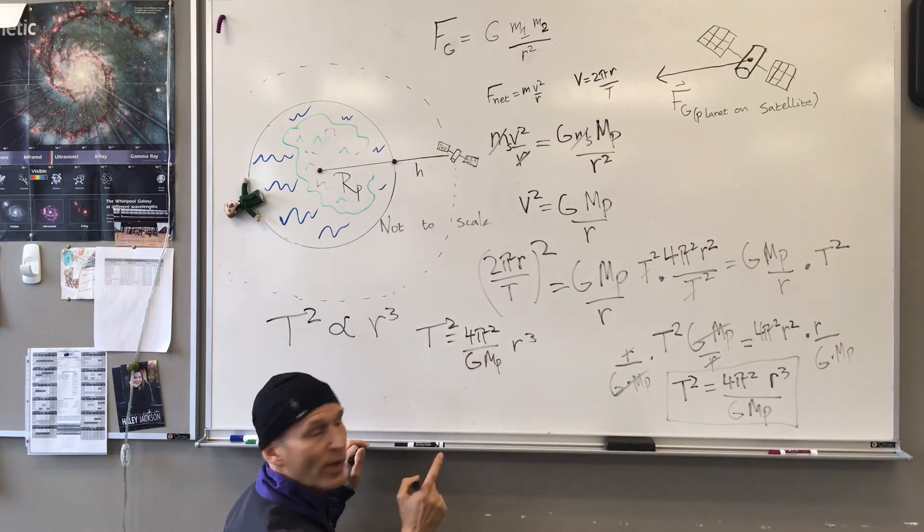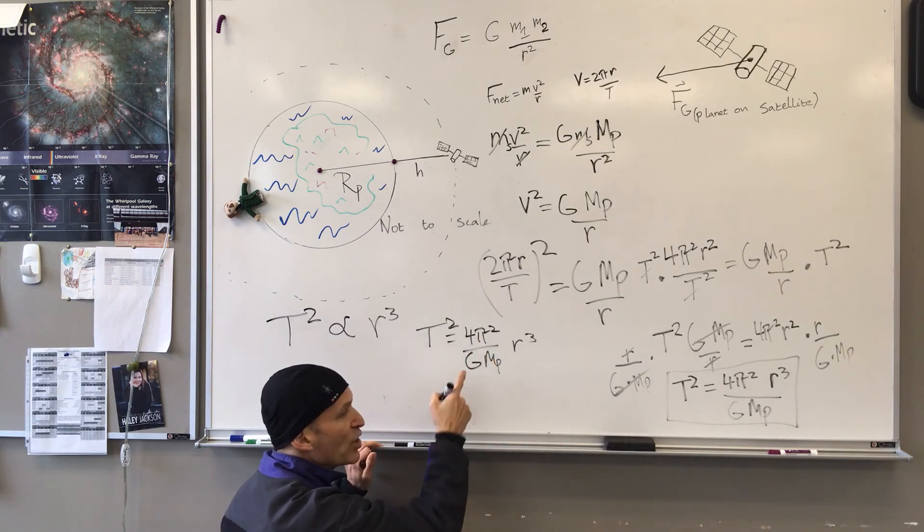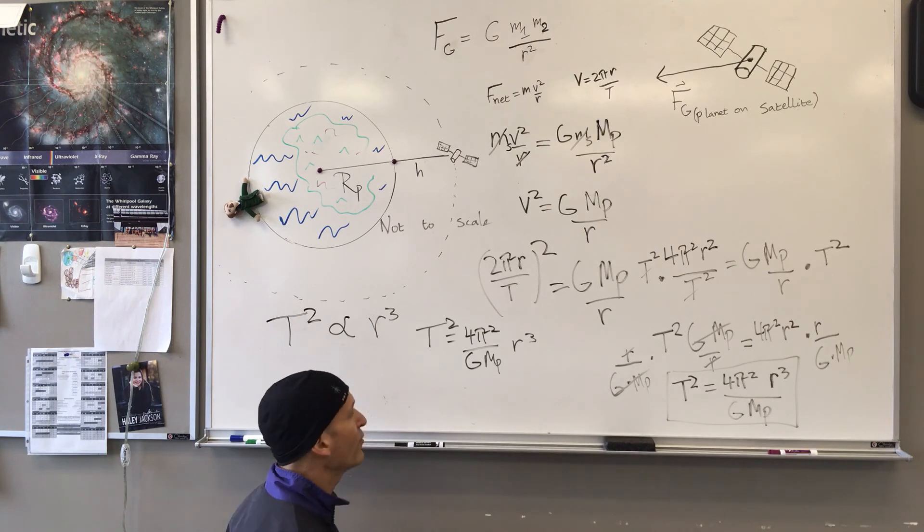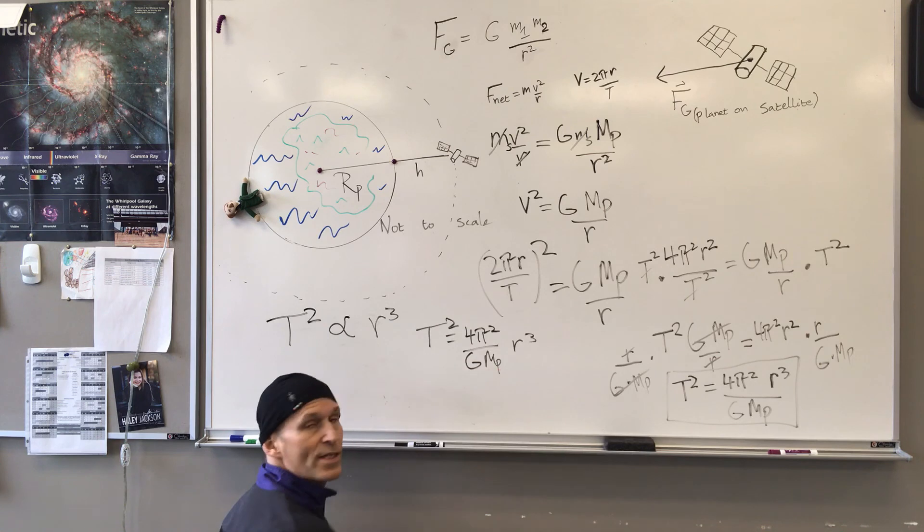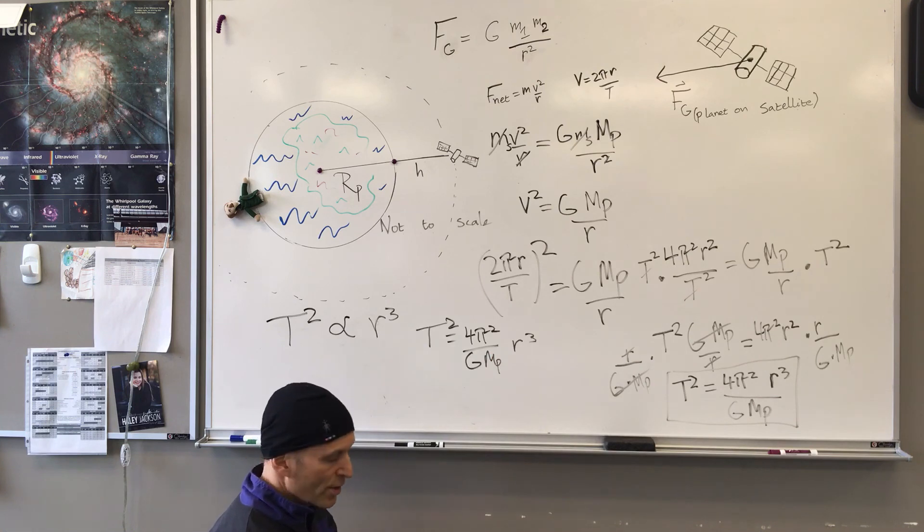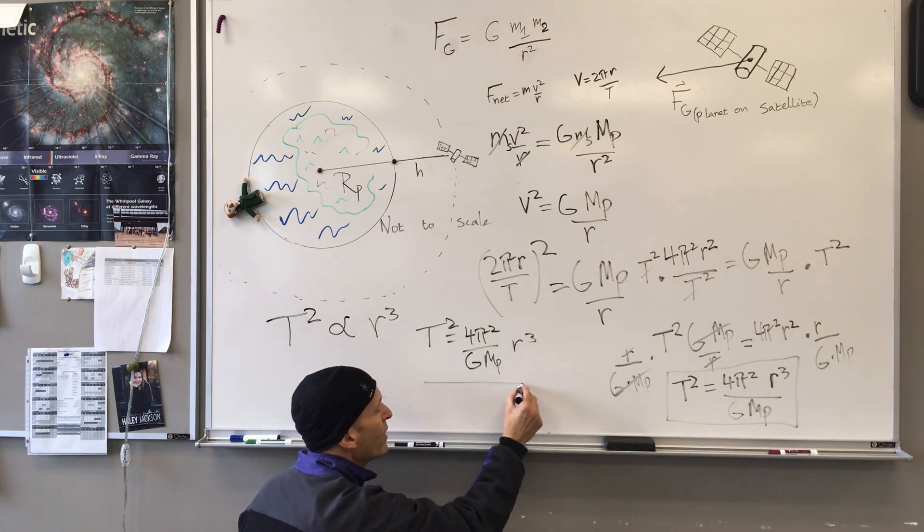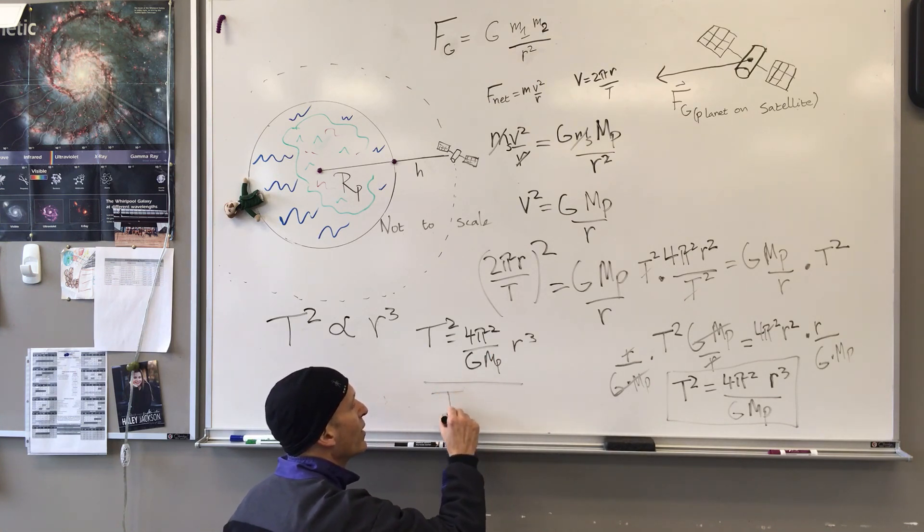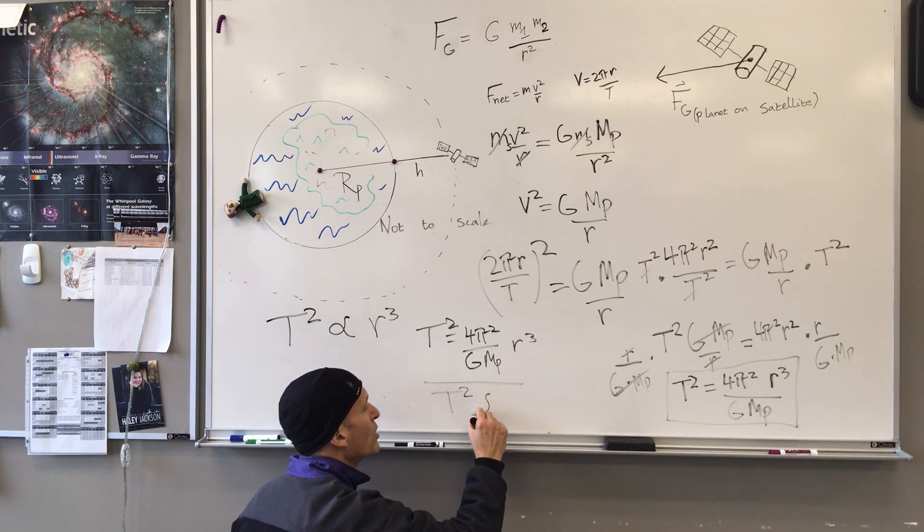4, just a number. π squared, obviously that's a constant. Capital G is the gravitational constant for universal gravitation. And MP is the mass of the planet, which won't change. So all of these things that are multiplied by R cubed are constants. So we've shown that it is correct to say that T squared is proportional to R cubed.